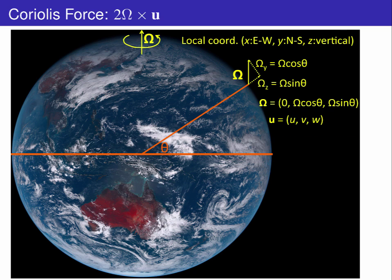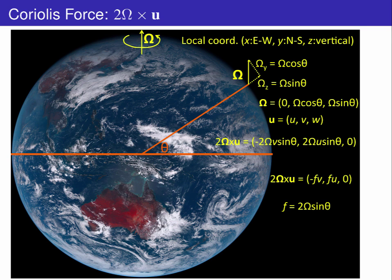Taking some velocity u, v, w at this point, 2 omega cross u approximates to negative 2 omega v sine latitude in the x, 2 omega u sine latitude in the y, and 0 in the z. This is approximate because we have ignored the vertical component of the Coriolis force because it is much, much smaller than gravity. This is normally written as negative fv in the x, fu in the y, where f equals 2 omega sine latitude is referred to as the Coriolis parameter.